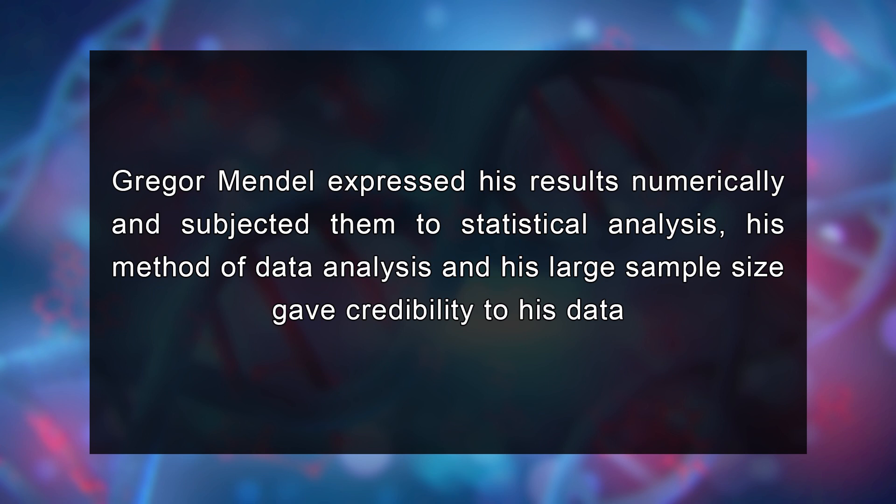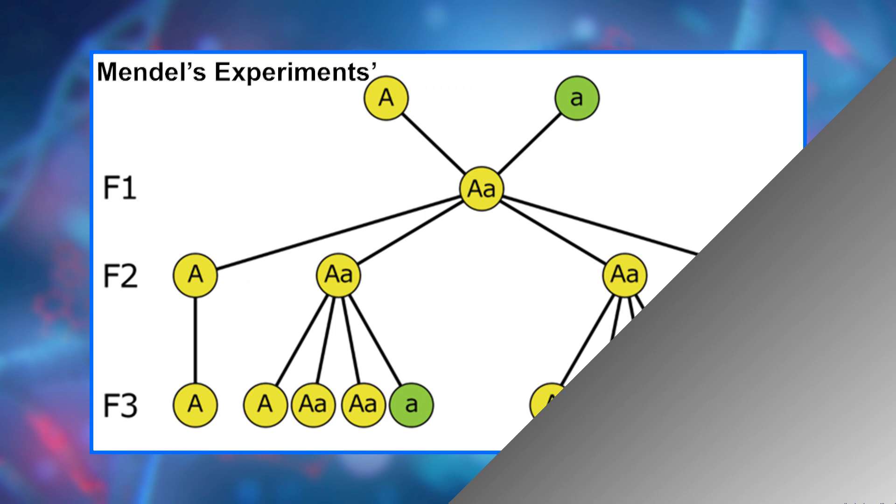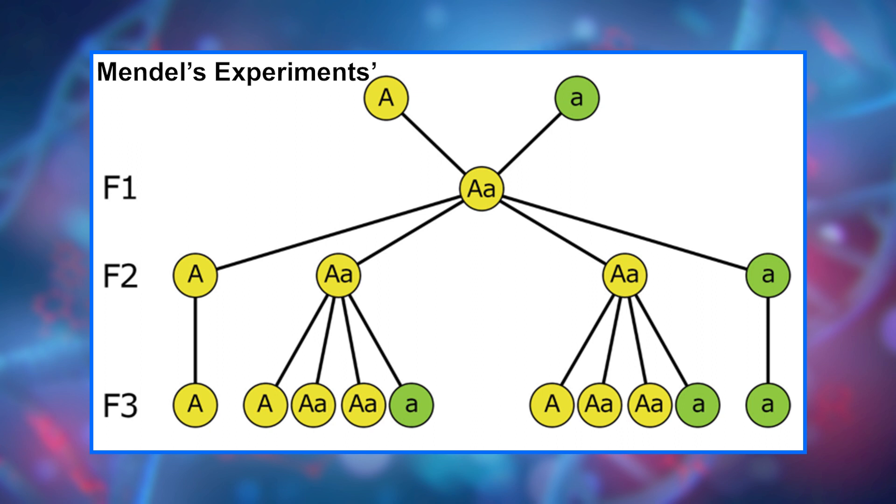He expressed his results numerically and subjected them to statistical analysis. His method of data analysis and large sample size gave credibility to his data. He also had the foresight to follow several successive generations — F2 and F3 — of his pea plants and record their variations. Finally, he performed test crosses, back-crossing descendants of the initial hybridization to the initial true-breeding lines to reveal the presence and proportion of recessive characteristics. Without his careful attention to procedure and detail, Mendel's work could not have had the impact it made on the world of genetics.